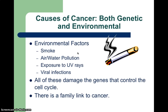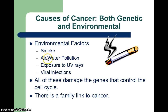This slide talks about some common environmental factors that can lead to certain genetic abnormalities that can lead to uncontrolled cell division. Obviously, smoke and secondhand smoke are one of the major causes of lung cancer. Air and water pollution — it's important that we keep not only the air we breathe clean, but also the water we drink. Exposure to UV rays is a major cause of skin cancer, and that's why it's so important to wear sunscreen or some protection from the sun, or a swim shirt.